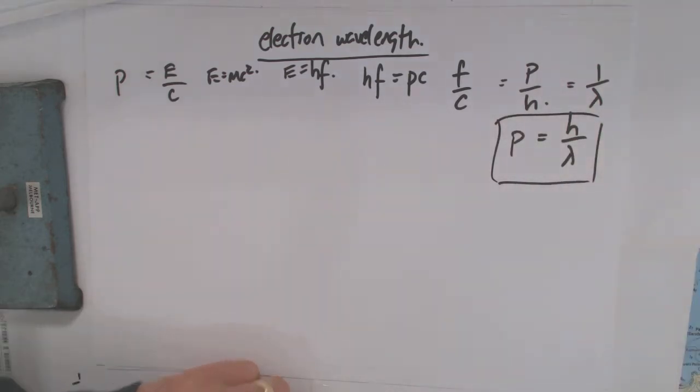What we've basically said there is that momentum times the wavelength is equal to Planck's constant. So we're starting to see the nuts and bolts where all this stuff is. These photons can be viewed as having a certain amount of energy. Their energy, they can be viewed as having a certain amount of momentum.